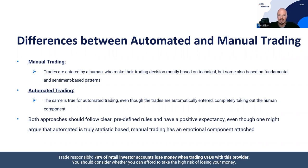Let's start with the differences between automation and manual/discretionary trading. In manual trading, trades are entered by a human — that's you or me clicking a mouse. We make trading decisions mostly based on technical, but sometimes also fundamental and sentiment-based patterns. In my case, it's a combination of all three. I'm not a purely technical trader.